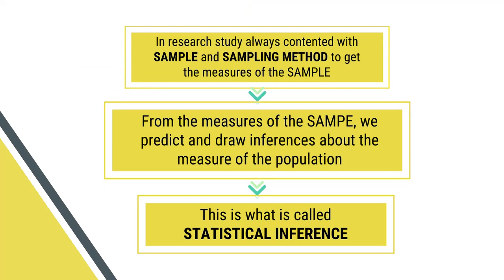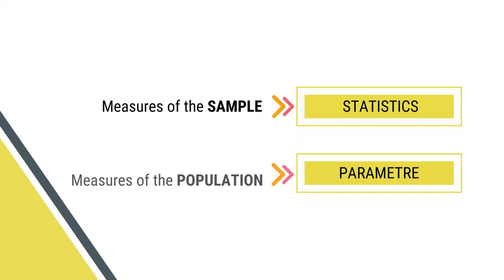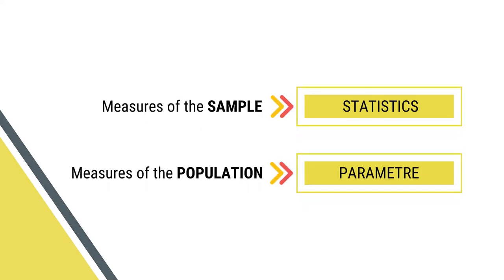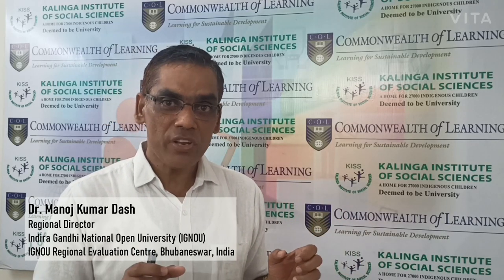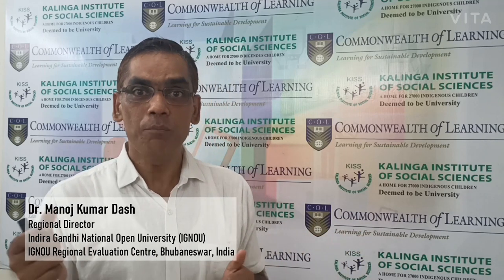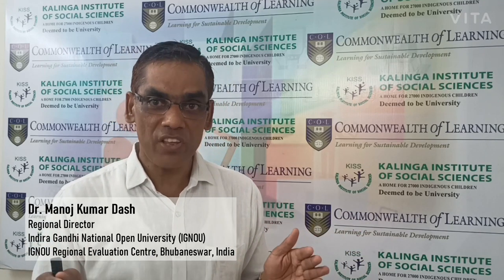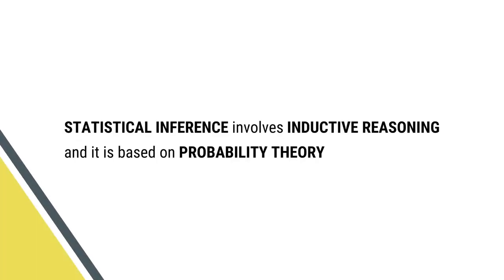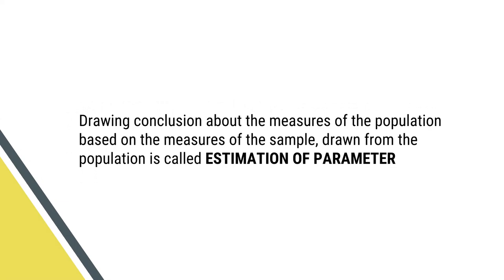Therefore, in a research study, we are always concerned with the sample, not the population. Sampling method is very important to draw the sample units from the population. From the measure of the sample, we predict and draw inferences about the measure of the population — this is what is called inferential statistics or statistical inference. The measure of the sample is called statistics; the measure of the population is called parameter. From the measure of the sample, we draw conclusions, predictions, or inferences about the measure of the population, i.e., the parameter. The whole process is called statistical inference. It involves inductive reasoning and is based on probability theory. Drawing conclusions about the measure of the population based on the measure of the sample drawn from the population is called estimation of parameter.